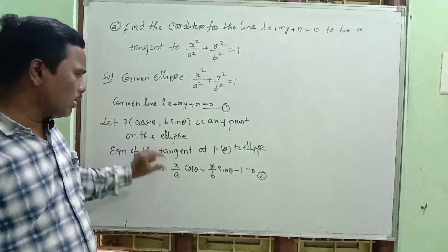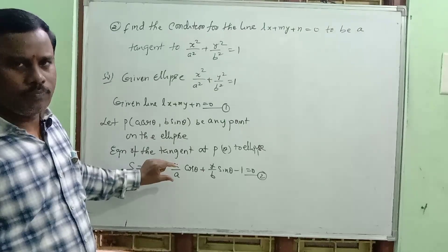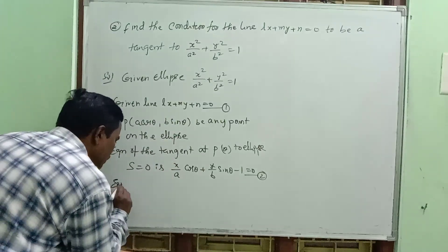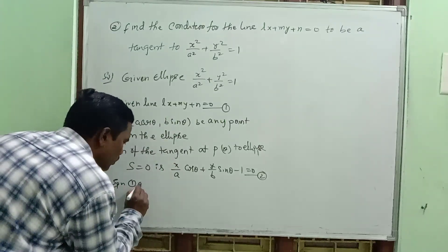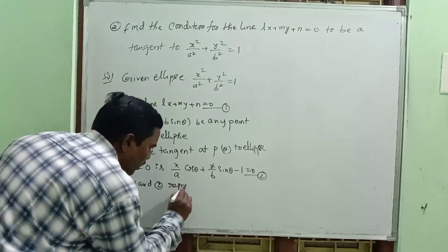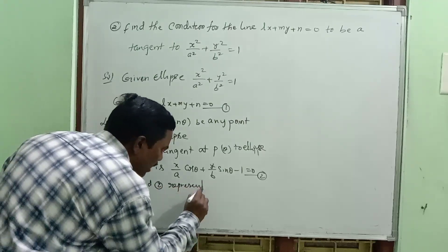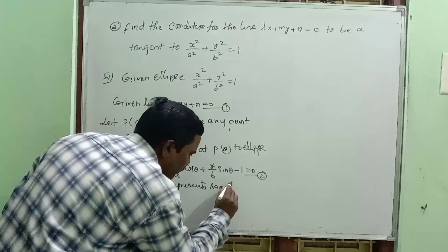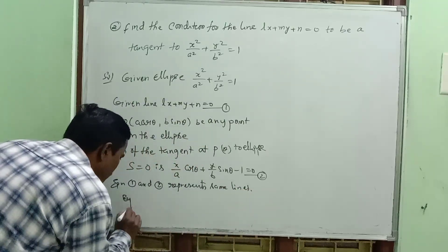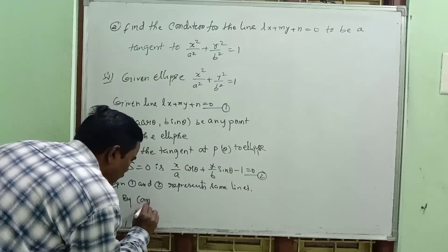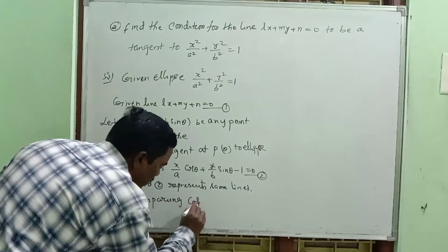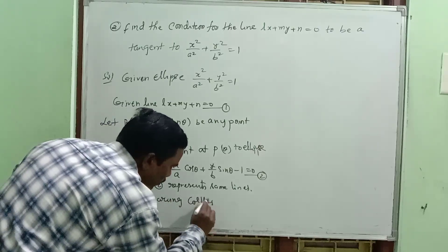Equations one and two represent the same line. By comparing coefficients on both sides: l corresponds to cos theta by a, m corresponds to sin theta by b, and n corresponds to minus 1.